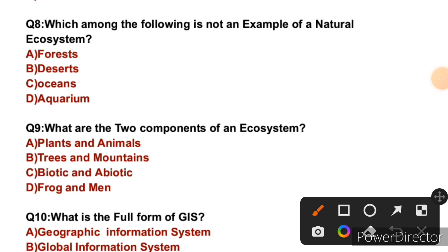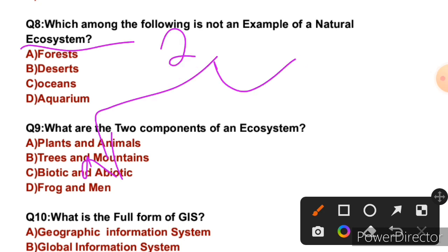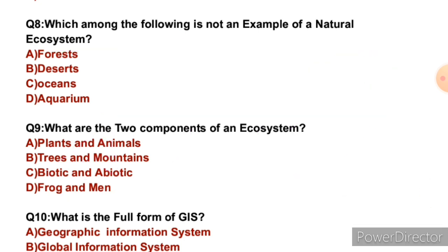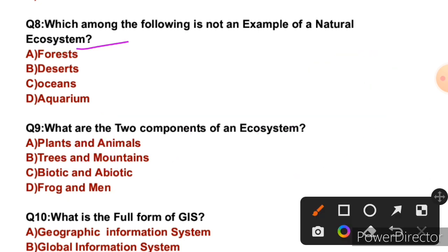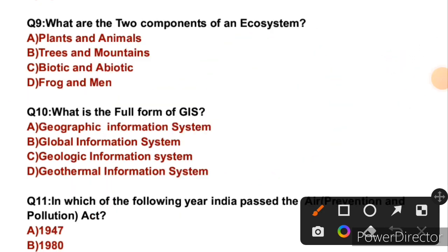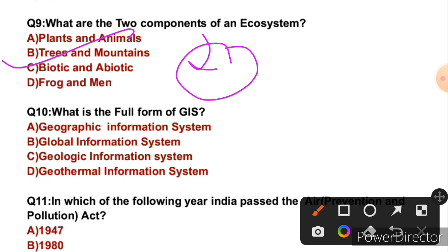Question 8: Which among the following is not an example of a natural ecosystem? Basically, ecosystems have two types: natural and artificial or manmade. Among forest, deserts, bay, ocean — aquarium is not a natural ecosystem; it is an artificial or manmade ecosystem. Question 9: What are the two components of an ecosystem? One is abiotic and another is biotic. So the right answer is C.